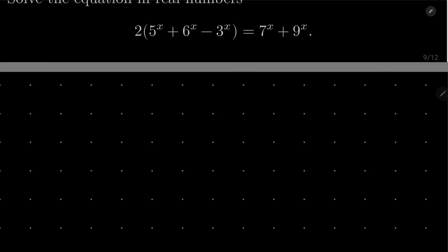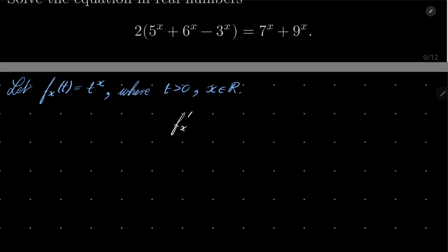Here is my solution. As I suggested, let f sub x of t equal t to the power of x, where t is a positive number and x is some real number. We differentiate it twice. So we have: f prime is x times t to the power of x minus 1. And if I differentiate it a second time, I get x times (x minus 1) times t to the power of x minus 2.